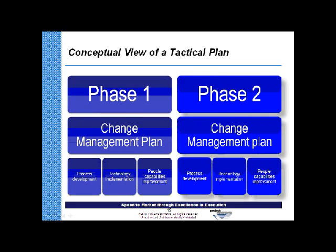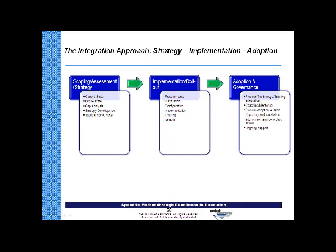A tactical plan conceptually looks like a change management plan, plus individual plans for process development and deployment, technology implementation, and an overall plan to create people capabilities improvement. That first assessment and scoping activity is the first chance to say — before we go to the technology platform, before we go to requirements, installation, configuration, implementation, training, and rollout — we're going to get a sense of how we're trying to use this, what the organizational goal is, what the charter is, and what the mission is. Then we go into implementation, rollout, and lastly adoption and governance.